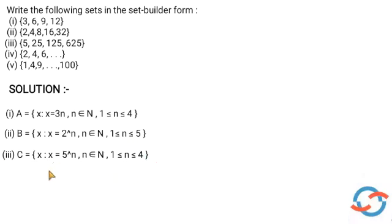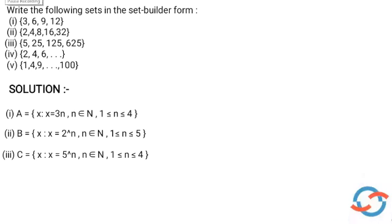So the third answer is: C = {x : x = 5ⁿ, n ∈ N, 1 ≤ n ≤ 4}.